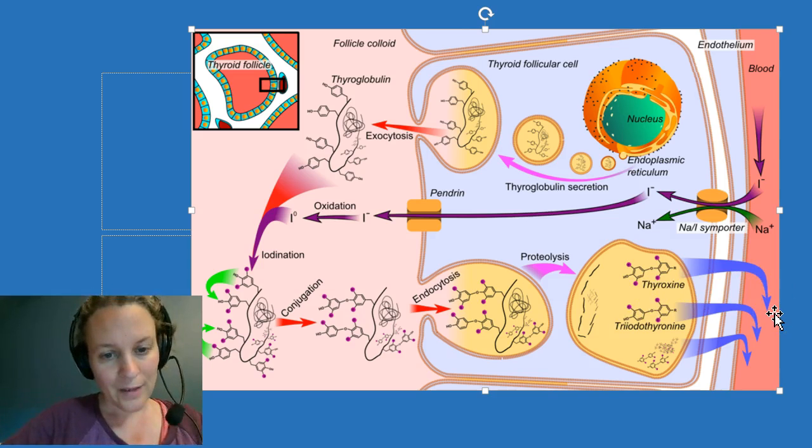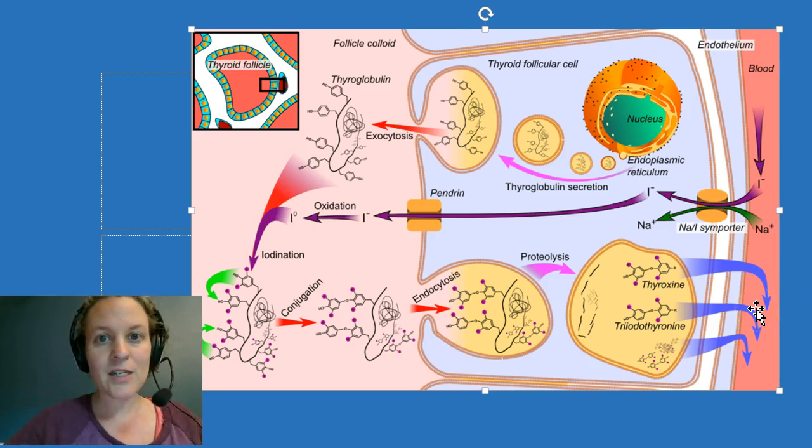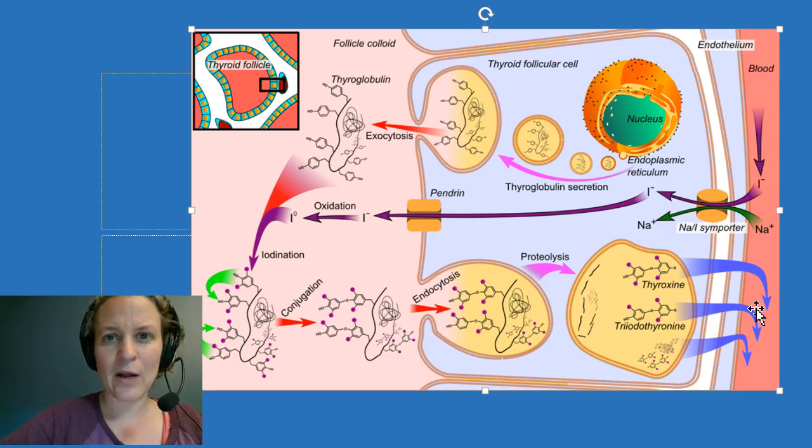You can imagine that T4 is a little bit easier to form, and it's also more stable. So most of what we're secreting into the blood is T4. It's a smaller percentage of T3. But remember what I said about how T3 is actually the active form.